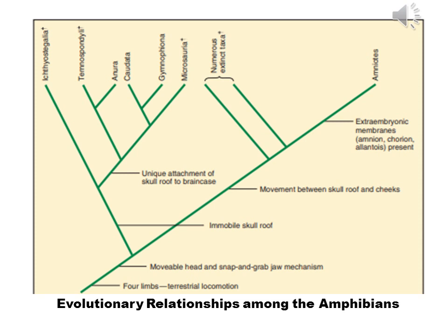This is the cladogram. It shows some evolutionary relationships among the amphibians. The earliest amphibians arose during the Devonian period. A non-amniotic lineage gave rise to three orders of modern amphibians and numerous extinct taxa. The main branch has only three living orders, but the extinct taxa are many in number. The dagger symbols indicate that these taxa are extinct.